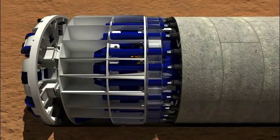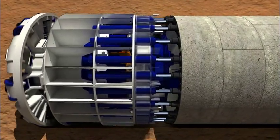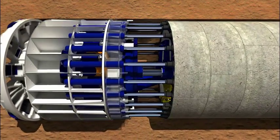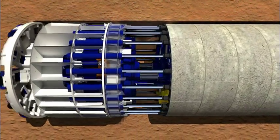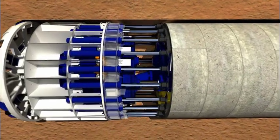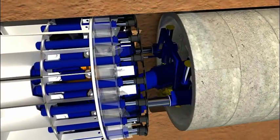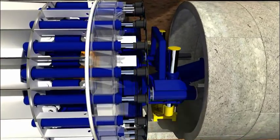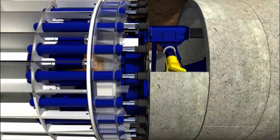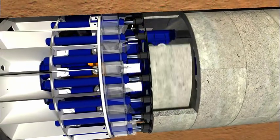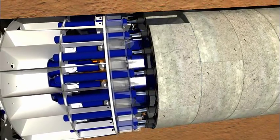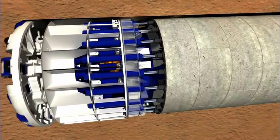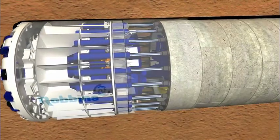During an EPB boring stroke, the cutter head turns and thrust cylinders extend to push the machine forward. These cylinders transfer the thrust to the cutter head by reacting against the tunnel lining. After each TBM advance, the thrust cylinders retract. Then, another ring of segments is placed by a segment erector and a new boring stroke begins. Since the cylinders react against the tunnel lining, it is not possible to erect the lining simultaneously while boring. Thus, tunnel boring and tunnel lining erection are sequential operations.